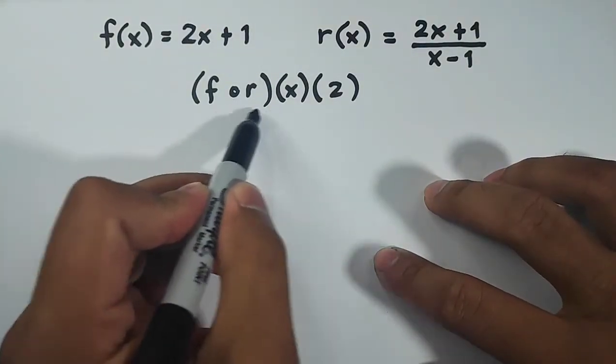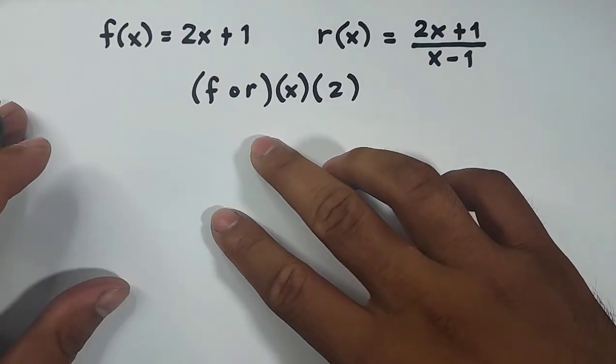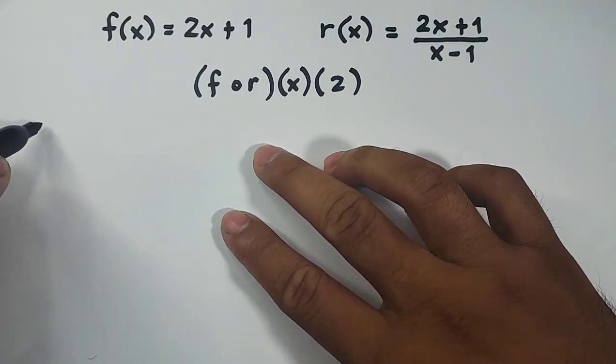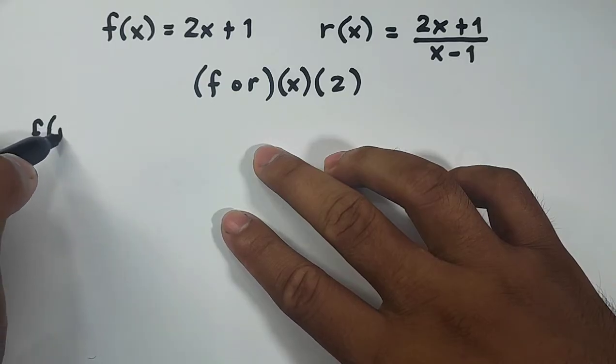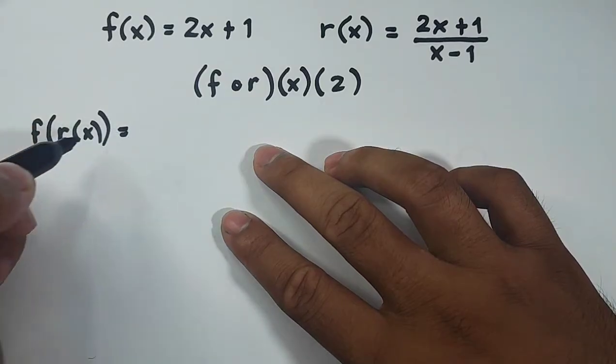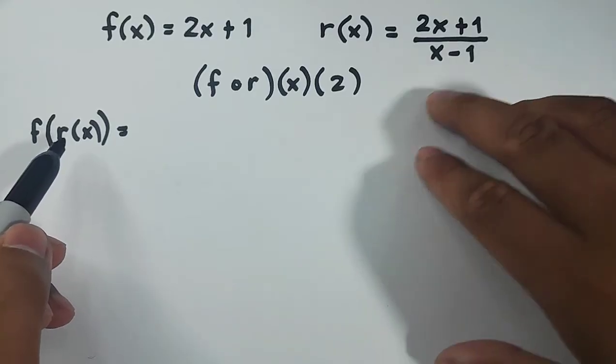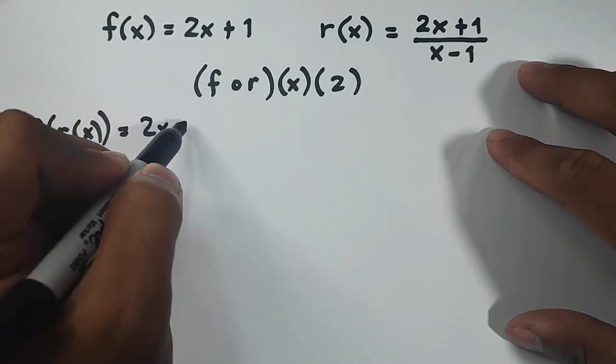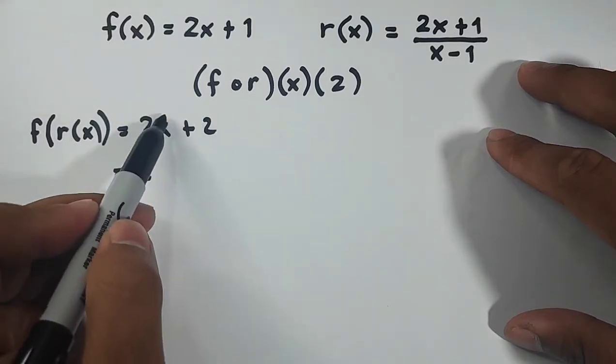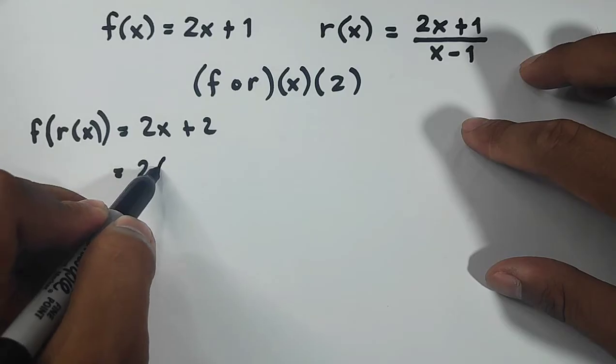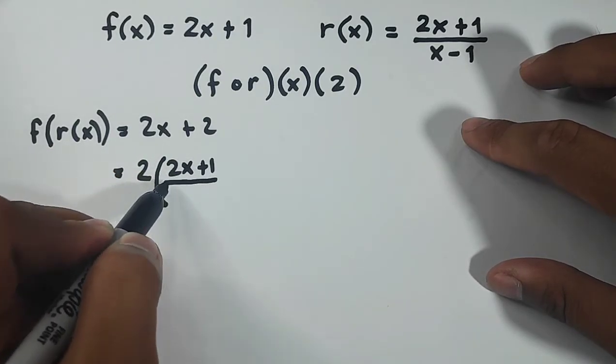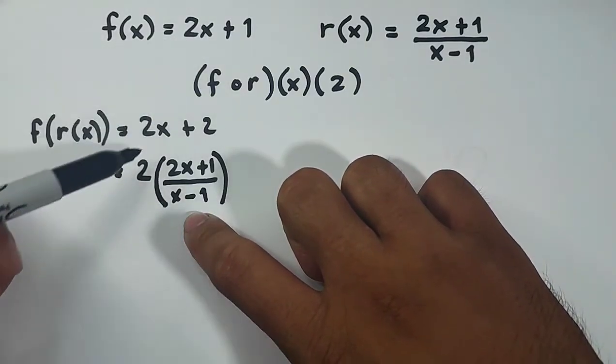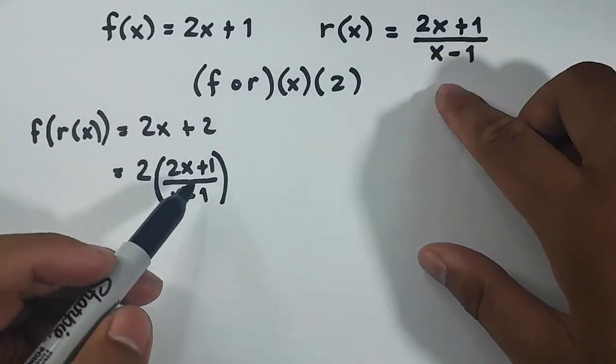We have here, f of r of x of 2. First step, evaluate this muna. So i-rewrite natin ito bilang para makapag-save tayo ng space. So let's write this bilang f of r of x, kasi parehas lang naman sila. Evaluate muna natin dito. Now, what will happen here is that itong r natin, itong value ng r of x, siya yung magiging input natin for this. So meron tayong 2x plus 1. It will become 2, and then yung x natin, ito siya mismo. Put it in parentheses. That is 2x plus 1 over x minus 1.